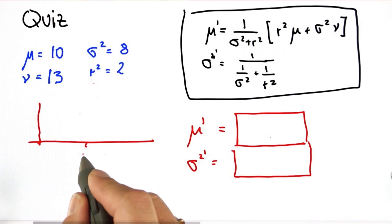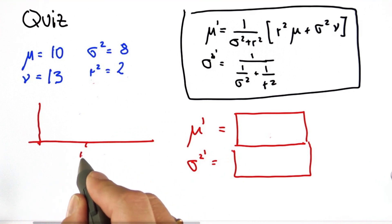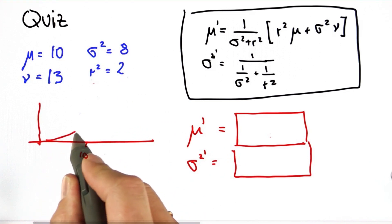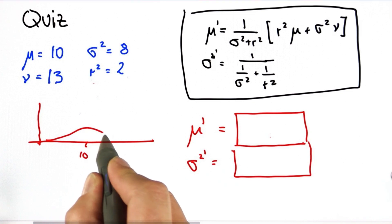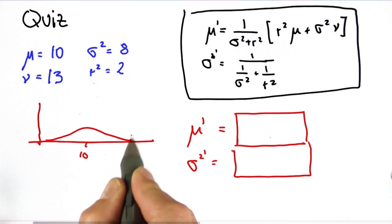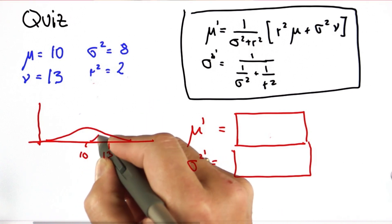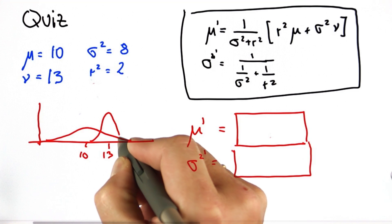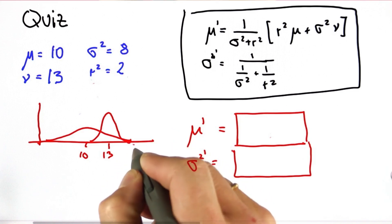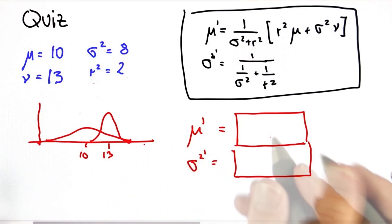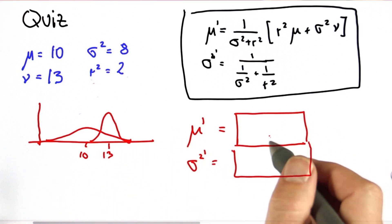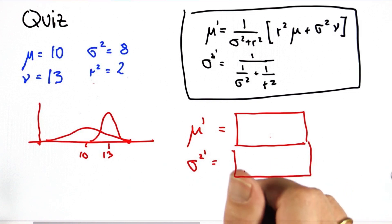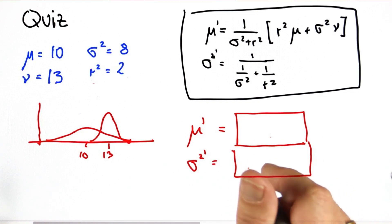This corresponds to the following picture: there's a relatively shallow distribution centered on 10 and a much more peaky distribution centered on 13. Compute for me what the resulting mu prime and sigma squared prime are.